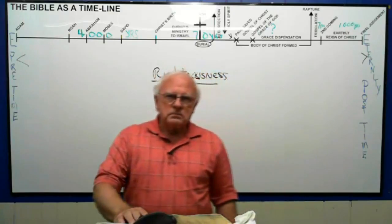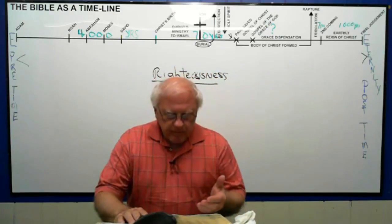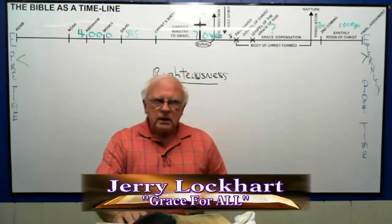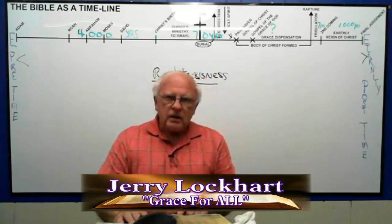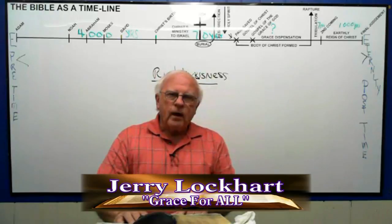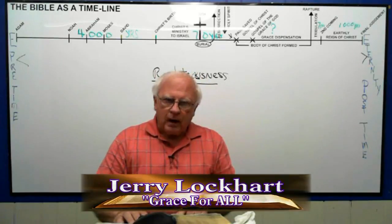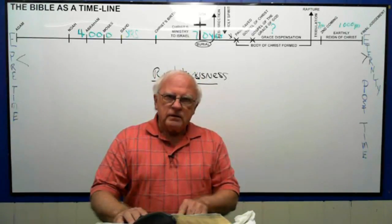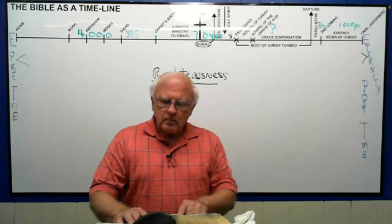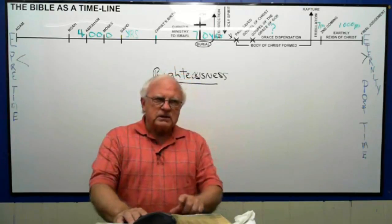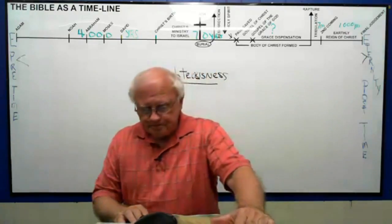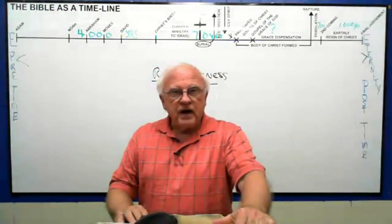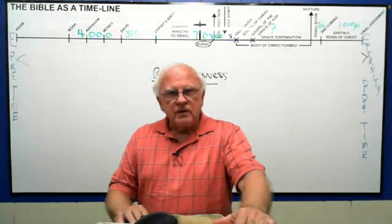Whom God has set forth to be a propitiation through faith in His blood. To declare His righteousness for the remission of sins that are passed through the forbearance of God. To declare, I say, at this time, His righteousness. The Apostle Paul, writing in Romans, says at this time to declare God's righteousness. Verse 26: To declare, I say, at this time, His righteousness, that He, God, might be just, and the justifier of him which believeth in Jesus. The belief of verse 22 is to believe in the one who had that faith in verse 22. The righteousness of God, which is by faith of Jesus Christ. Believe in that one. Believe in Jesus. Verse 28: Therefore, we conclude that a man is justified by faith without the deeds of the law.